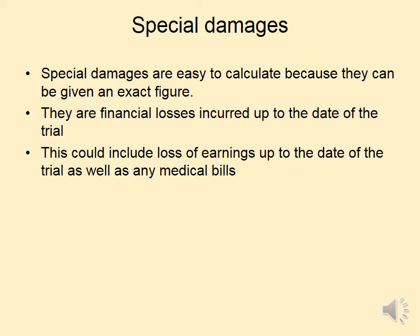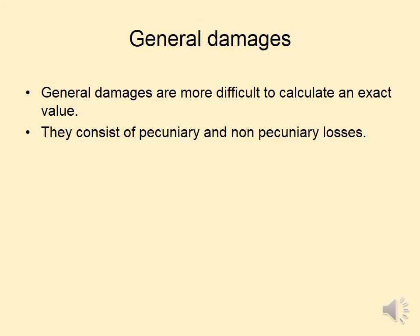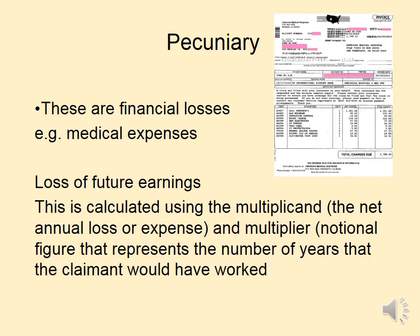General damages are more difficult to calculate an exact figure for. Thinking about pecuniary losses — these are financial losses such as future medical expenses and loss of future earnings. This is calculated using the multiplicand, which is the net annual loss or expense, and the multiplier, which is a notional figure representing the number of years that the claimant would have worked.